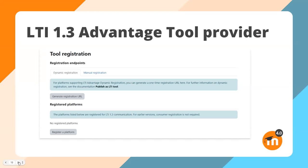Moodle 4.0 takes interoperability one step further by moving from LTI 1.1 to 1.3 advantage standard. The benefits of 1.3 over 1.1 include dynamic registration, assignment and grade services — that's syncing grades and results to the grade book — and name and role provisioning services, which is sharing of roster or enrolment information.